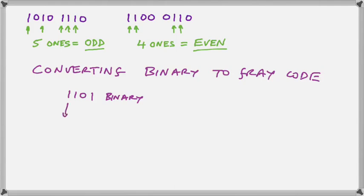So observe what happens. First, we bring down the most significant bit. That is the most significant bit. And we're carrying it down to the first significant bit of our gray code. The next thing we do is we perform an XOR operation.